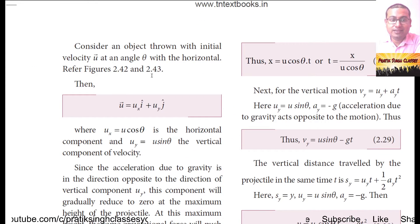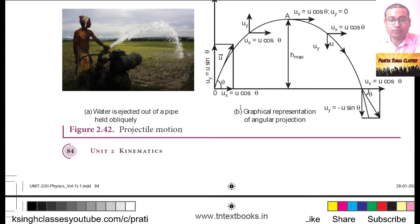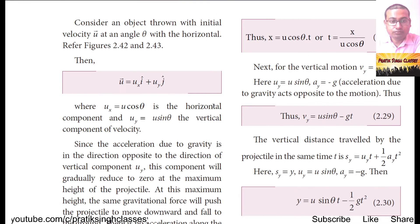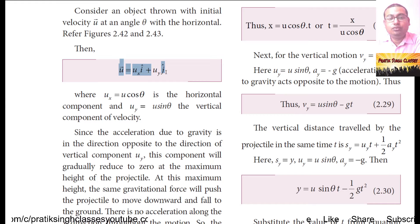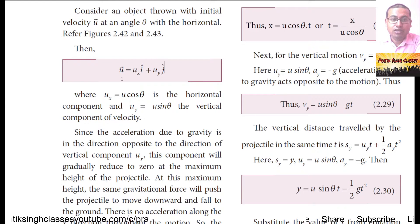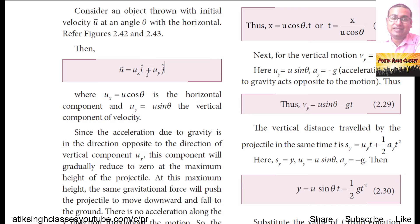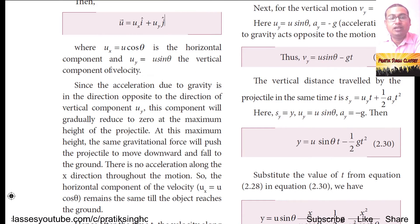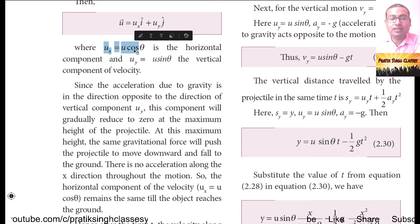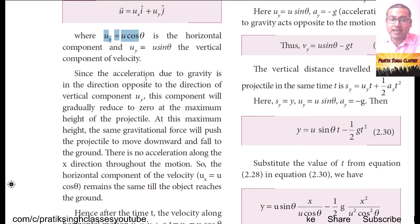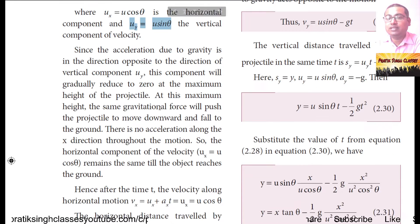Consider an object thrown with initial velocity u at an angle theta with the horizontal, as shown in figures 2.42 and 2.43. The initial velocity is given by u = ux î + uy ĵ. The components of velocity are taken in the x-axis and y-axis. We know that ux = u cosθ, which is the horizontal component, and uy = u sinθ, which is the vertical component of velocity.